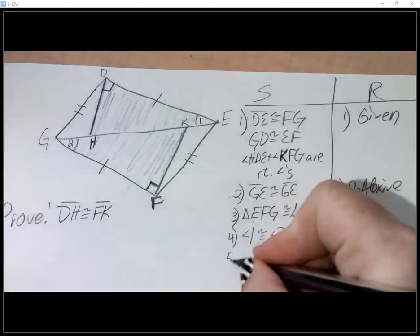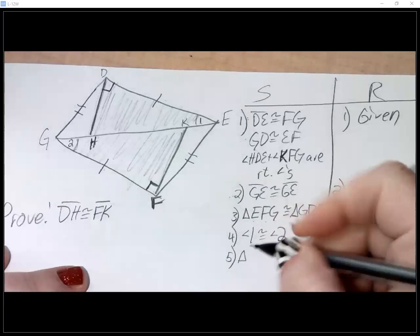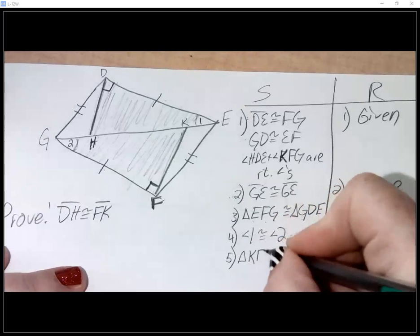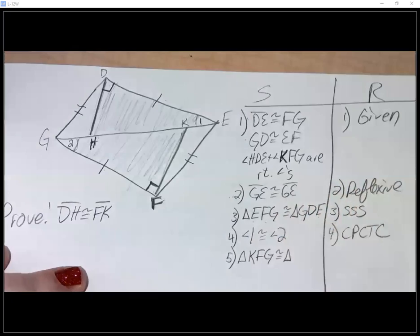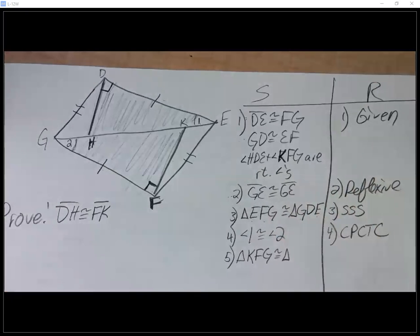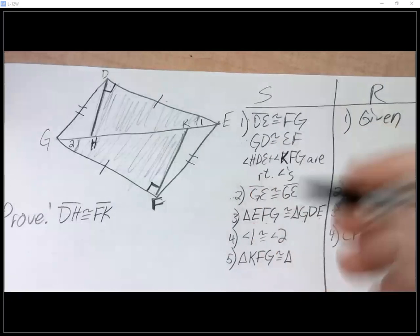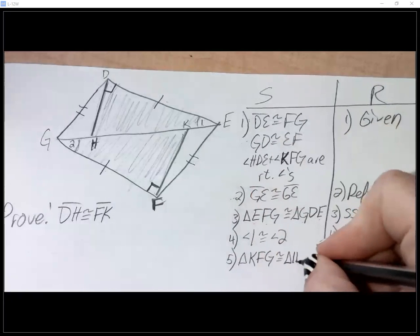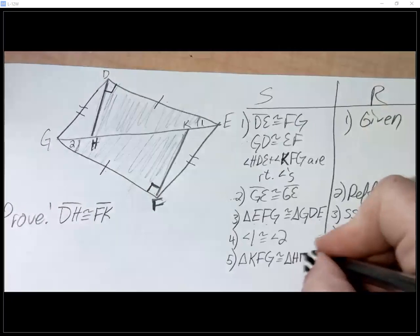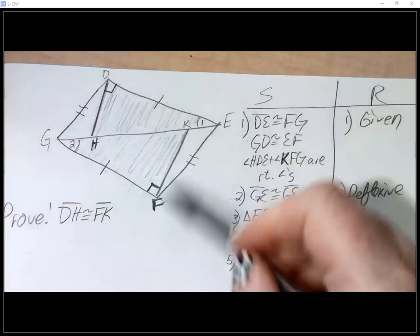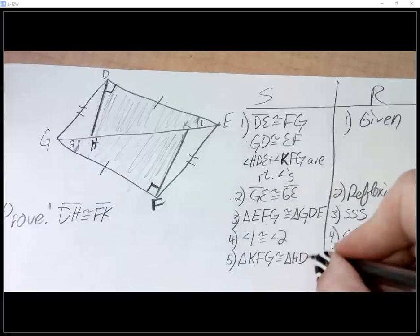If I say triangle, I think you said KFG, but remember it doesn't matter how you name the first one, you just got to match the second one up. So if I say KFG, so who matches with K in the top triangle? H. F is the 90, that's got to match with D. And then G is the one marked with one arc, so that would have to match up with E. And what's our reason?